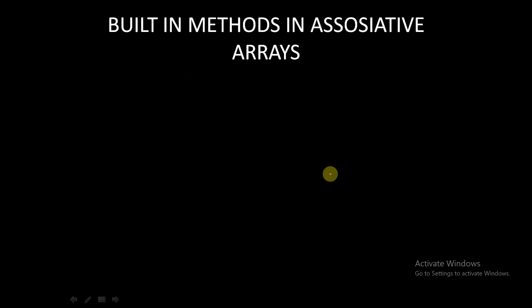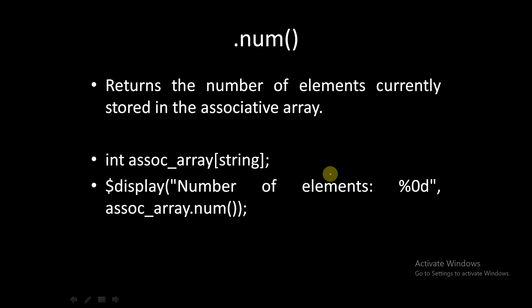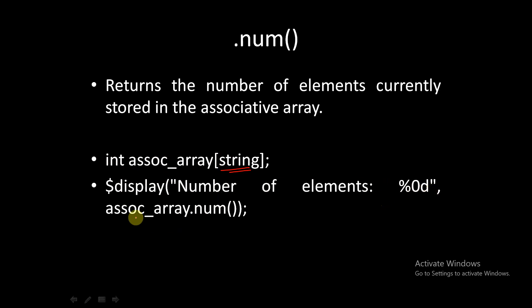Today we will conclude our discussion on associative arrays by covering the built-in methods available. The first method is `.num`, which returns the number of elements currently stored in the associative array. For example, if you have declared an associative array of int data type with a string index, you can write: `$display("Number of elements is %d", associative_array.num);`